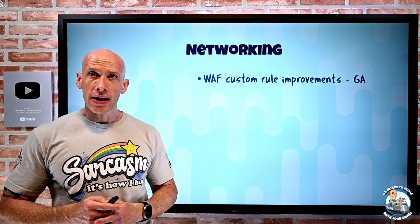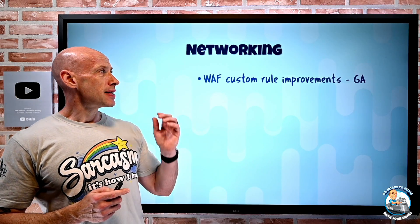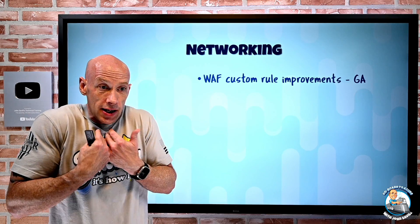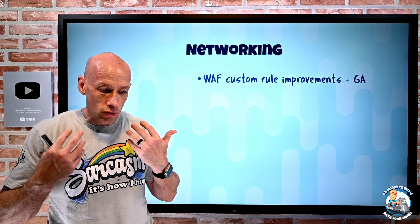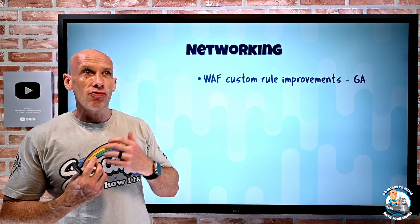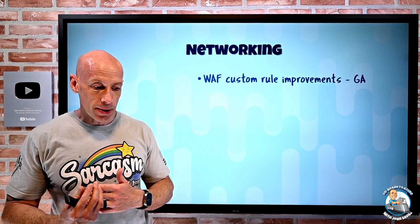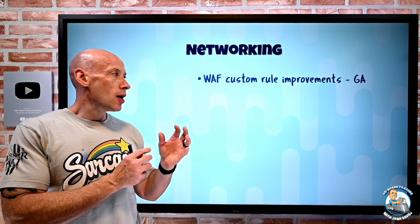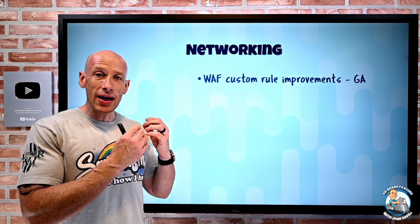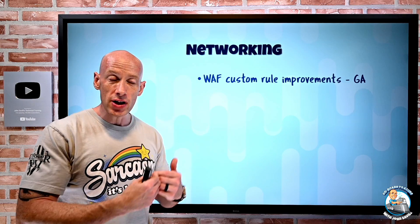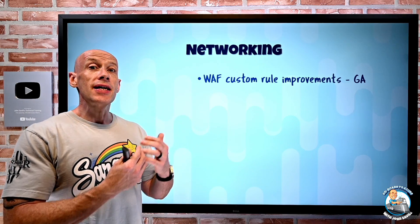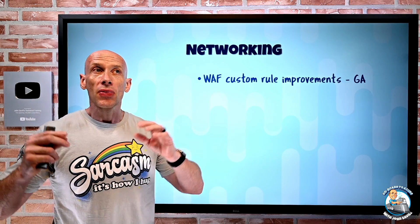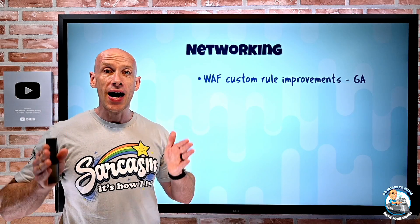On the networking side, there are a number of custom rule improvements. The whole point of custom rules is I can create my own rules on how different requests are processed. There's the regional web application firewall, which we link to AppGateway, which is a regional resource. Then there's a global web application firewall that we use with Azure Front Door, and both of them have had changes.